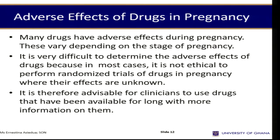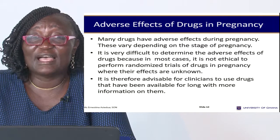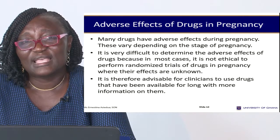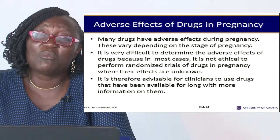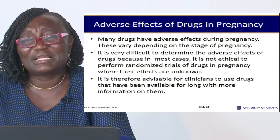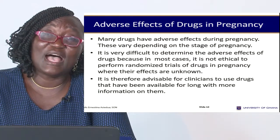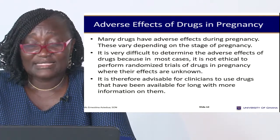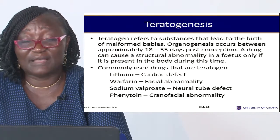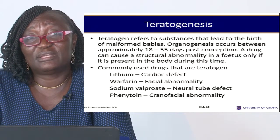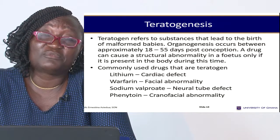Many drugs have adverse effects during pregnancy, and these vary depending on the stage of pregnancy. In the first trimester — particularly the first two weeks during organogenesis — we should avoid any type of medication, because even mild over-the-counter medications could become teratogenic at that stage. It is therefore advisable for clinicians to use drugs that have been available for a long time and have more information behind them. A teratogen refers to any substance that can lead to the birth of a malformed baby.